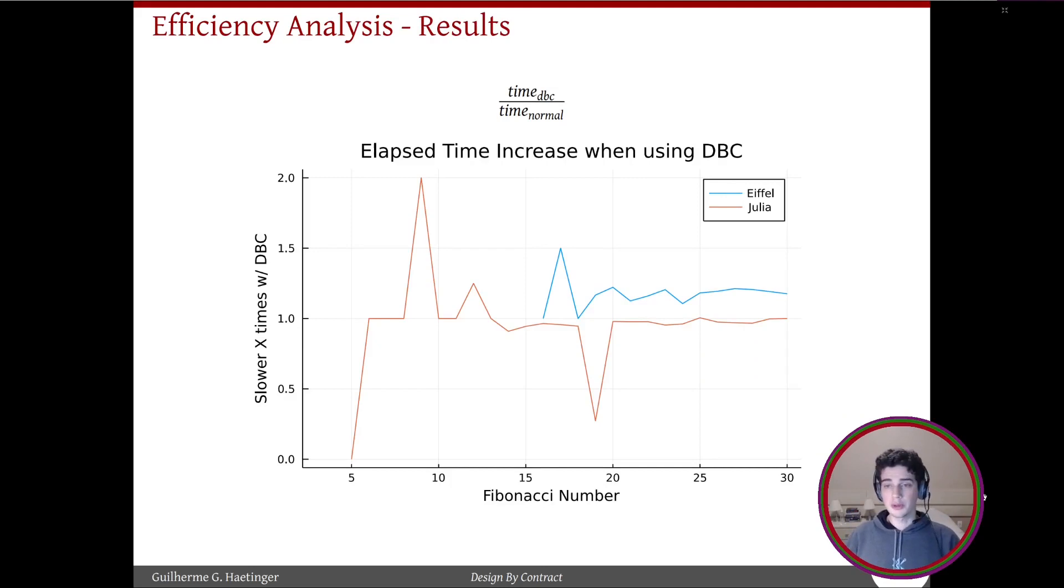So concluding, we can see that the overhead added by the DBC package both in Eiffel and Julia is almost non-existent. Of course, the complexity of your code will be defined by the complexity of the conditions and your logic.